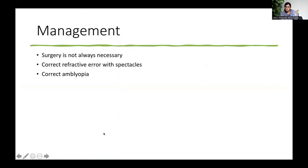Management: squints don't always need surgery. Sometimes correcting the refractive error with spectacles can automatically correct the squint. If you correct the amblyopia — where the brain is not developing to receive vision from the weak eye — by forcing the brain to respond to that eye, the squint may correct by itself. So those are the available options.